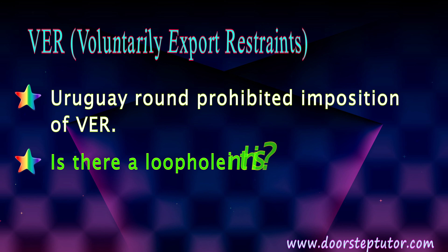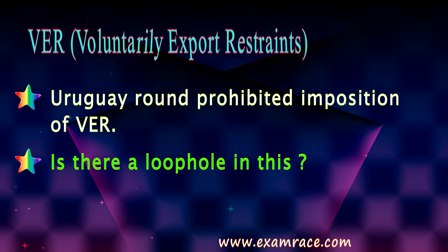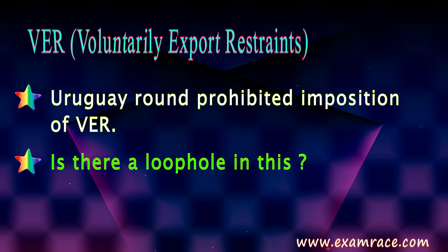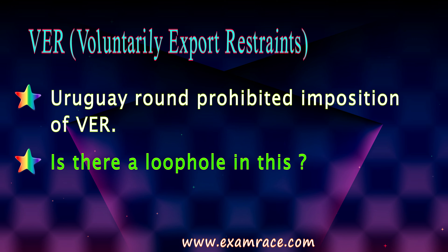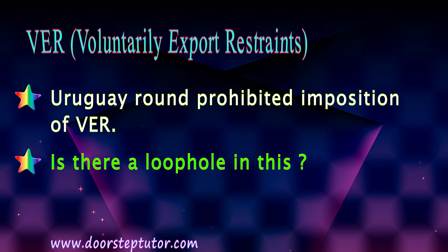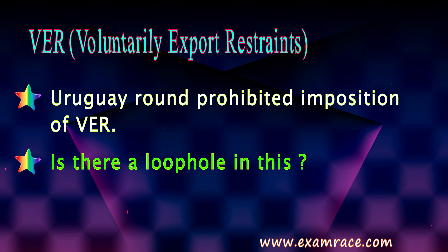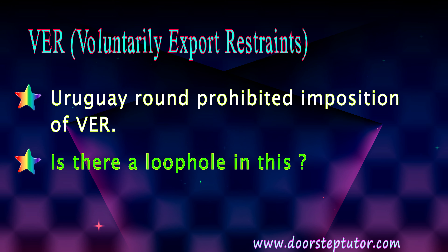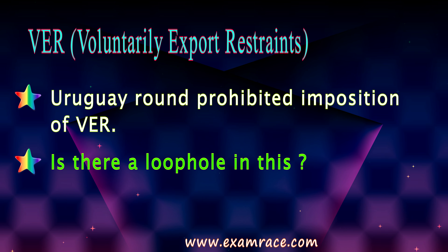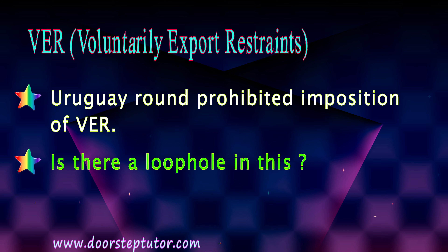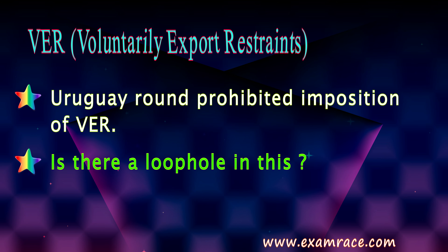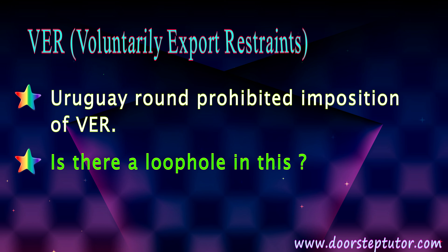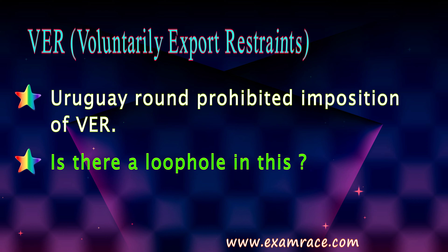VER was also prohibited under the Uruguay Round. However, there is a loophole: if a VER is imposed on a particular country, say the USA, and the USA cannot supply beyond a certain limit, the importing country can get supply of that product from any other country where VER is not imposed. VER only succeeds if it is imposed on all WTO member countries.